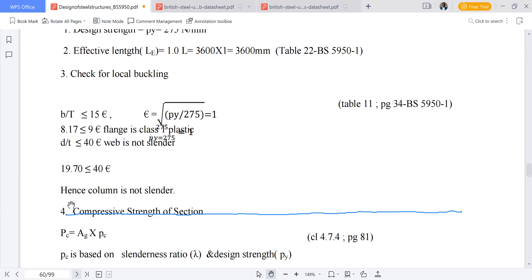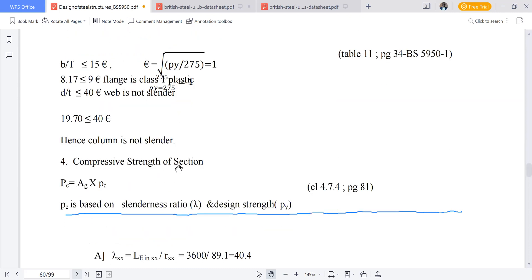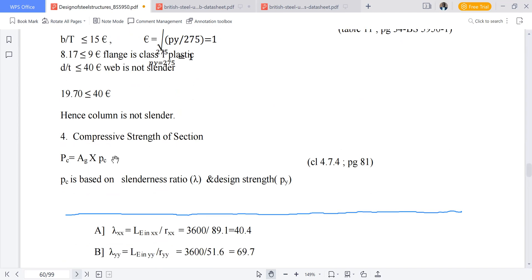We can conclude the column is not slender. Then we go to compressive strength of section. Compressive strength is given by the gross area of the section multiplied by the compressive strength pc obtained from Table 24c. To obtain this pc from Table 24c, you must use slenderness ratio and design strength.